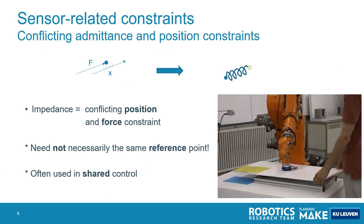Another interesting case is when we have conflicting admittance and position constraints — if you have a position and a force constraint in the same direction. The resulting behavior will be a virtual spring with damping sufficient to maintain the system stable. Specifying impedance using conflicting position and force constraints is in fact easier than specifying impedance using a six-dimensional stiffness matrix.